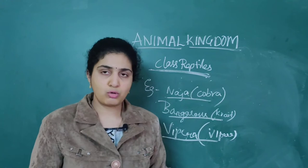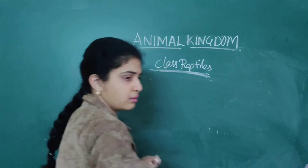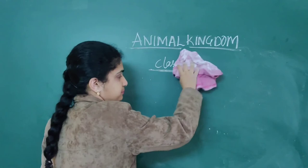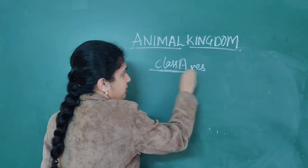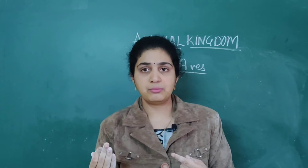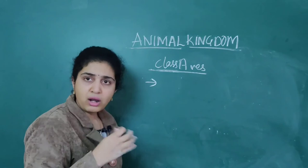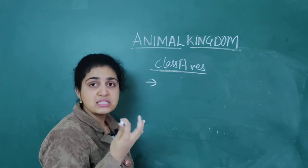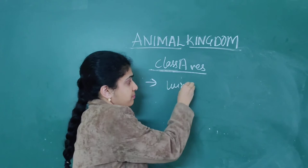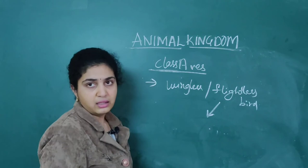Next we are going to continue with class Aves. Aves means birds — they will have wings for flying. There are flight birds as well as flightless birds. Flight birds use their wings for flying. However, there is one bird that cannot fly — these are called flightless birds, and that bird is the ostrich.